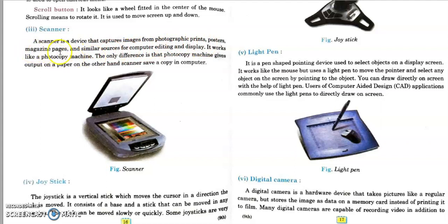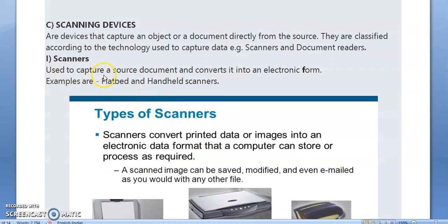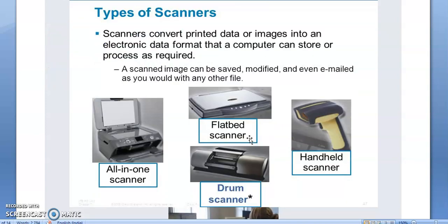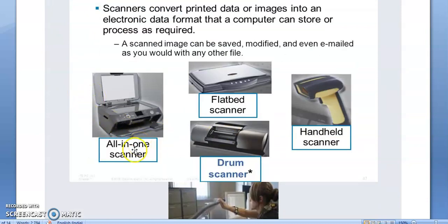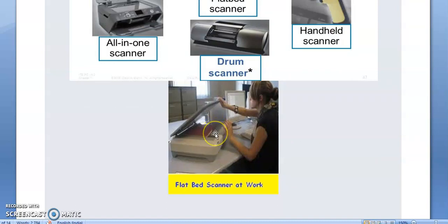A scanner works like a photocopy machine; the only difference is that a photocopy machine gives output on paper, whereas a scanner saves a copy in the computer. It can scan any document or photo into a computer. Scanners are used to capture a source document and convert it into electronic form. Examples include flatbed and handheld scanners. An all-in-one scanner can take printouts as well. There are also drum scanners and handheld scanners.